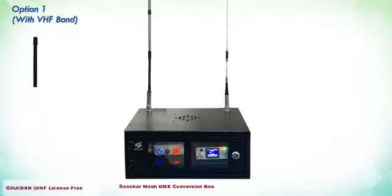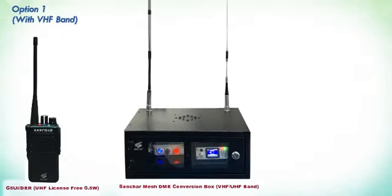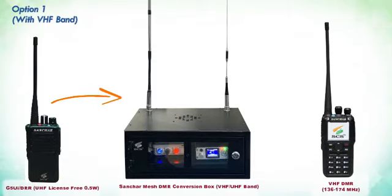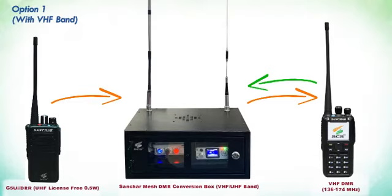Option one with VHF band: the G5 UI DRR UHF license-free radio communicates with a VHF DMR radio through the Sanchar DMR conversion box.